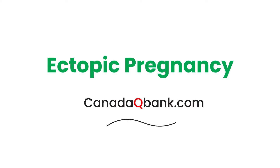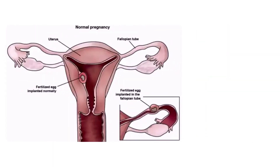In this video we're going to talk about ectopic pregnancy. Ectopic pregnancy is best explained with a diagram. Normally, when you have a fertilized egg or a zygote, it implants into the uterus — in particular, the endometrial lining of the uterine cavity.